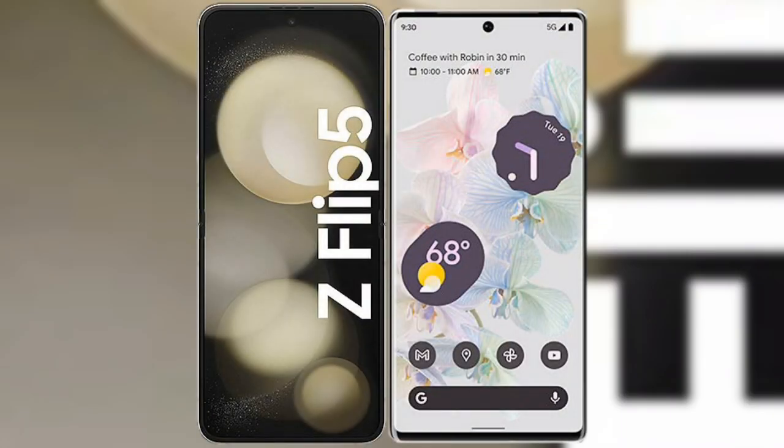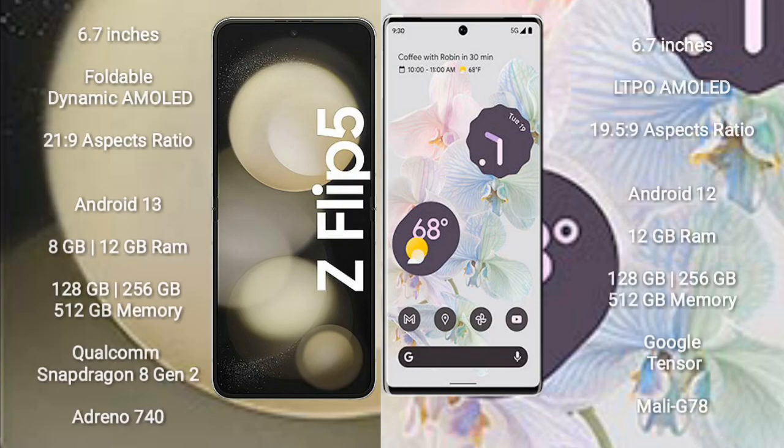Comparing the Samsung Galaxy Z Flip 5 with the Google Pixel 6 Pro. The Samsung Galaxy Z Flip 5 comes with a 6.7-inch foldable Dynamic AMOLED display with an aspect ratio of 22:9. The Google Pixel 6 Pro comes with a 6.7-inch LTPO AMOLED display with an aspect ratio of 19.5:9.